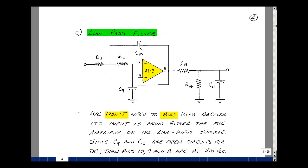The next circuit we're going to build is called a low-pass filter. What we're going to do here is we're going to limit the range of frequencies that are coming from the circuit. We're going to do this because of the sampling frequency that we're doing for our digital part of the circuit. We don't need to bias this op-amp at two and a half volts because what's coming in here is the output of either the microphone amplifier or the line input summer. They both have a two and a half volt offset.